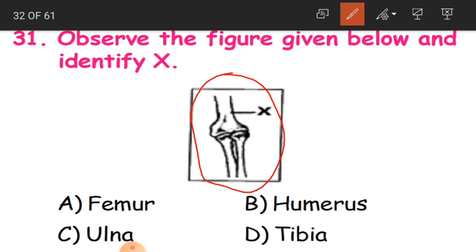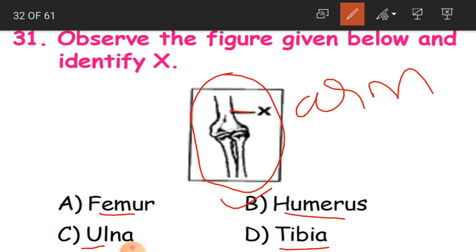Question 31: Observe the figure given below and identify X. We have to identify what this bone is called. The options are femur, humerus, ulna, or tibia. The answer is B - humerus. This is a long bone in the arm.